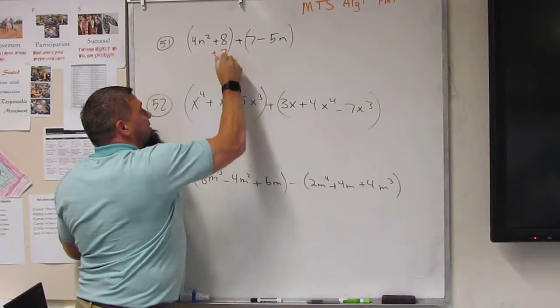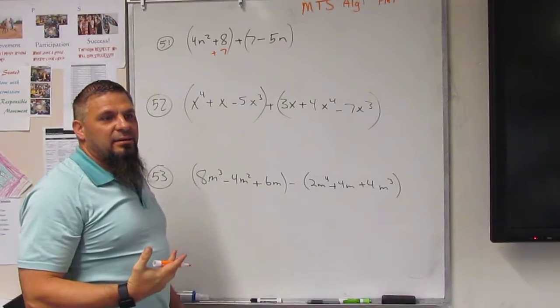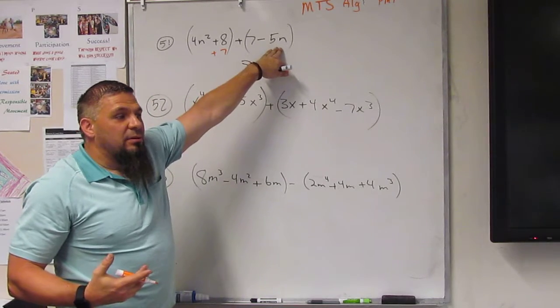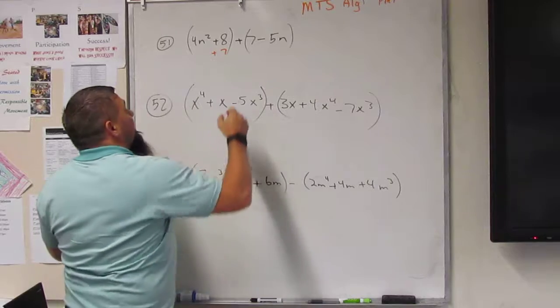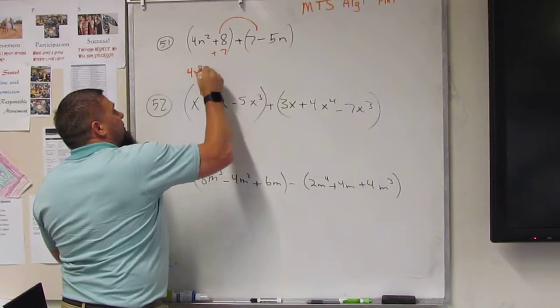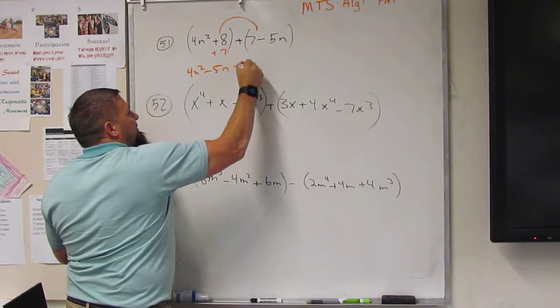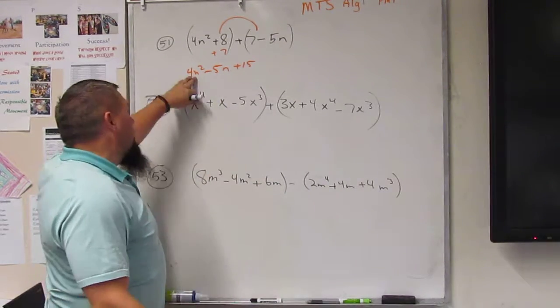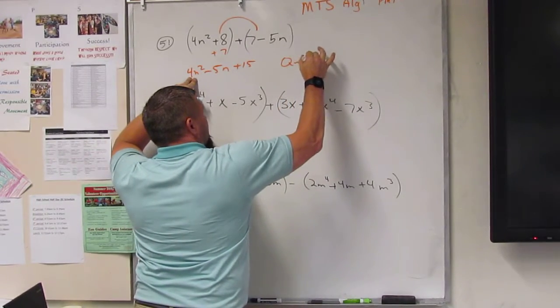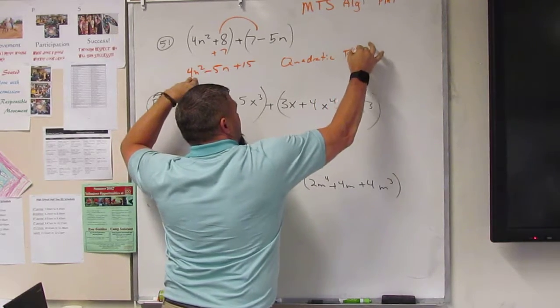So that means we're going to add 7. I can't add 5n to that, right? Because that's squared and that's just 1n. So the only thing I can add are these two. So I've got 4n squared minus 5n plus 15. And that's, what do we call that? A quadratic trinomial.